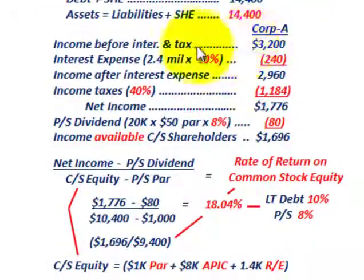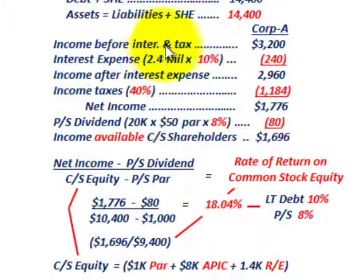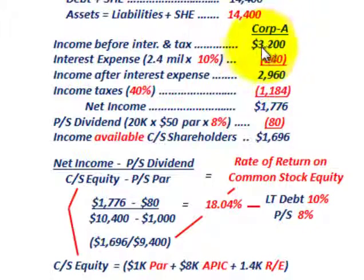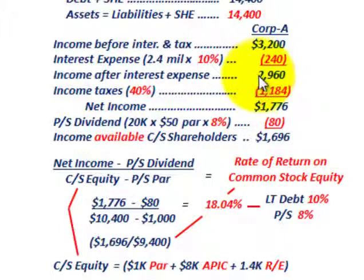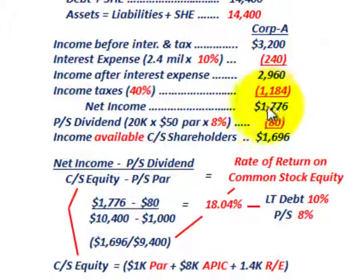Now let's look at the income for Corporation A. We start with income before interest and taxes at $3,200,000. We subtract interest expense on the $2,400,000 long-term debt at 10%, which is $240,000, giving us income after interest of $2,960,000. Applying a 40% income tax rate gives $1,184,000 in taxes, leaving net income of $1,776,000.